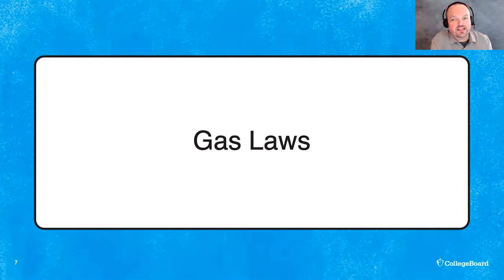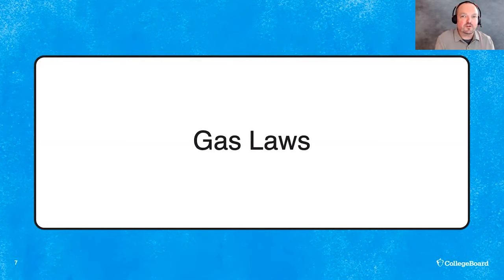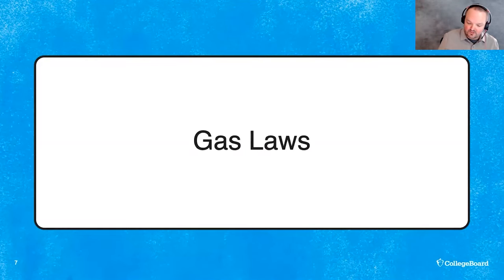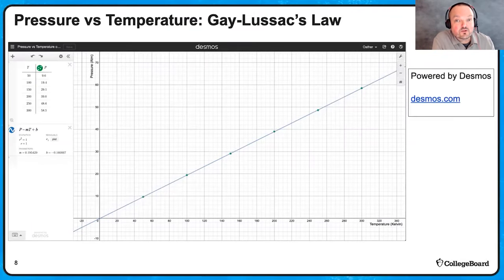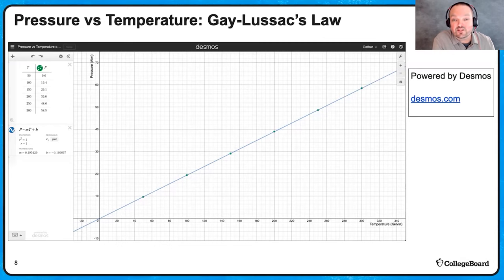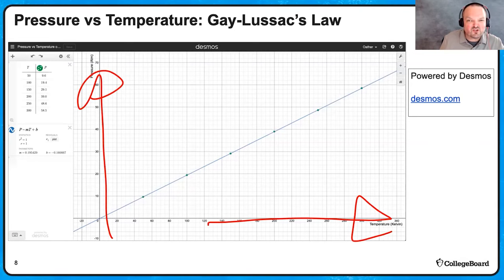I'm going to say a lot of names as we review the gas laws, though you don't need to know the names for the AP exam — I just love trivia. I want to focus on describing why the graphs look the way they do. The first gas law is Gay-Lussac's law, where we vary the temperature and see how it affects the pressure if we keep the volume constant. If I'm increasing the temperature, the particles move faster, so collisions with the walls involve a larger change in momentum, requiring a larger impulse, thereby increasing the pressure.